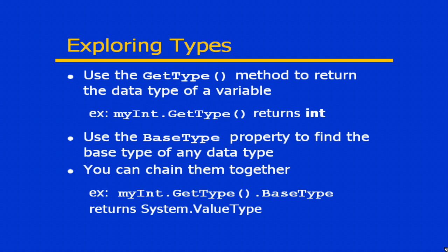Because the value types actually represent elements of a class — since we're talking about that base value type class — they also have properties and methods that are associated with them. Some of the more convenient properties and methods include, for example, the GetType() method. The GetType() method is a method we can use to return the type of a particular element. So, if I have a variable called myint, which is defined as an integer data type, then the GetType() method would return int as its value.